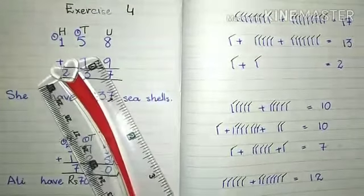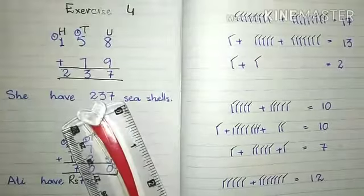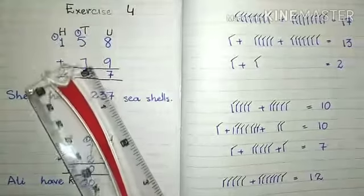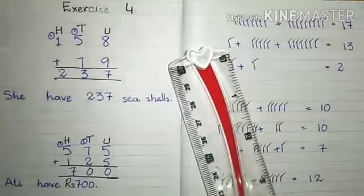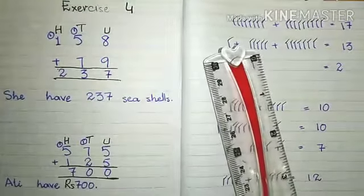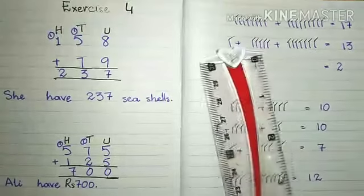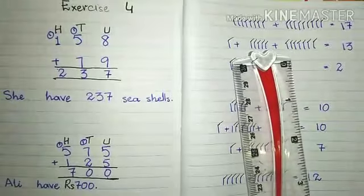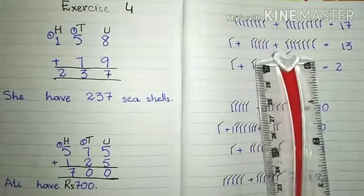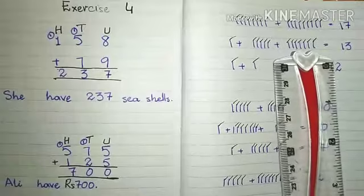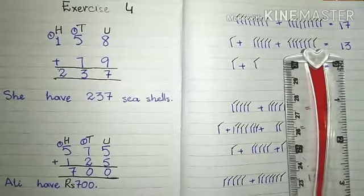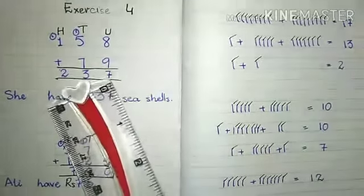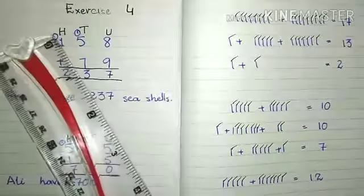It means our answer is 17. From 17 unit, we will write down and tens will go up. 7 we will write down and 1 will go up. Now we will count these numbers. Firstly we will draw 1 line, then 5 lines and then 7 lines. Then we will count: 1, 2, 3, 4, 5, 6, 7, 8, 9, 10, 11, 12 and 13.